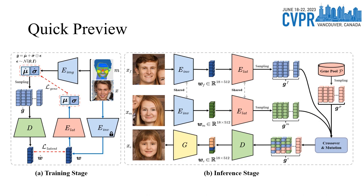During training, we extract individual facial genes for each facial region. In the inference stage, we generate the descendants' genes by simulating the genetic processes of crossover and mutation. We then decode the genes to synthesize their facial images.